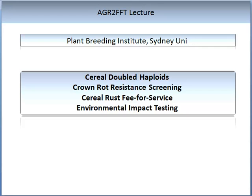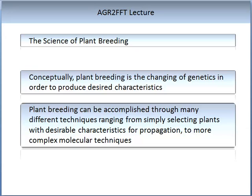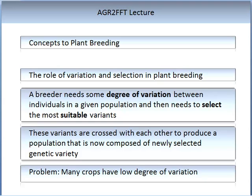The science of plant breeding, put simply, is the challenging, changing of genetics in order to produce a desired characteristic. Plant breeding can be accomplished through many different techniques ranging from simply selecting plants with desirable characteristics for propagation to more complex molecular techniques. There are several concepts to the science of plant breeding. Firstly, the role of variation and selection: a breeder needs some degree of variation between individuals in a given population and then needs to select the most suitable variants. These variants are crossed with each other to produce a population composed of newly selected genetic variety.